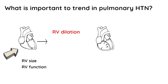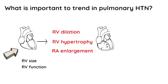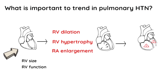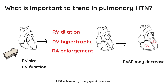Other red flags you might see include RV hypertrophy and right atrial enlargement. One important pearl is that once the RV dilates, the PASP may actually go down due to poor cardiac squeeze. So you might think that PASP is decreasing, but it's not necessarily a good thing because it may mean the right side of the heart is failing.